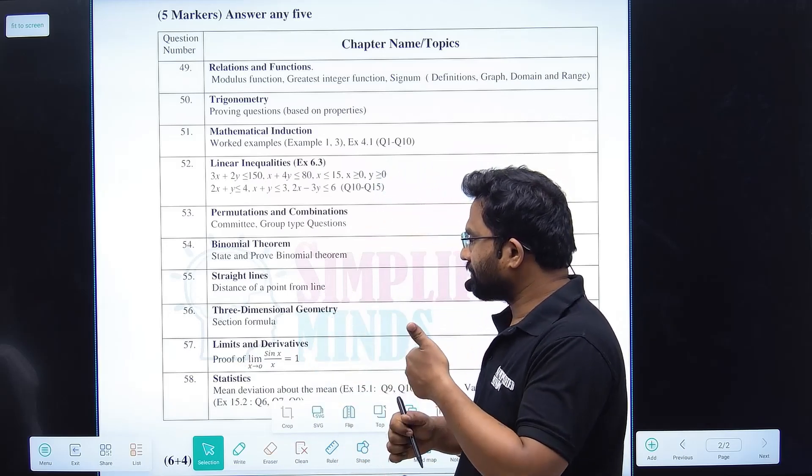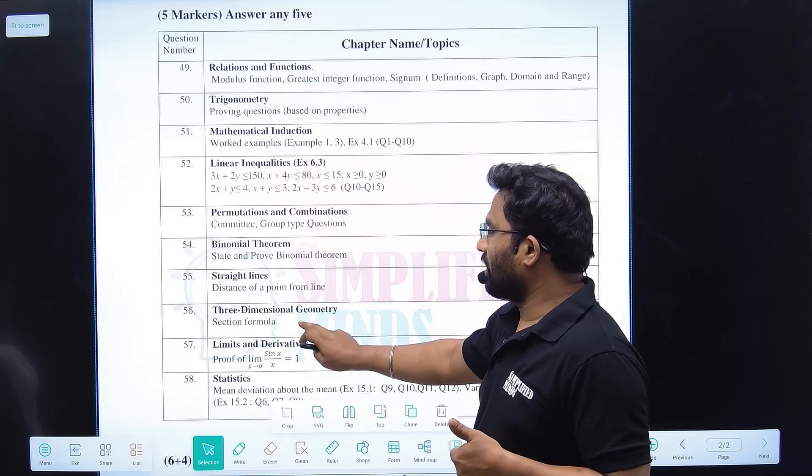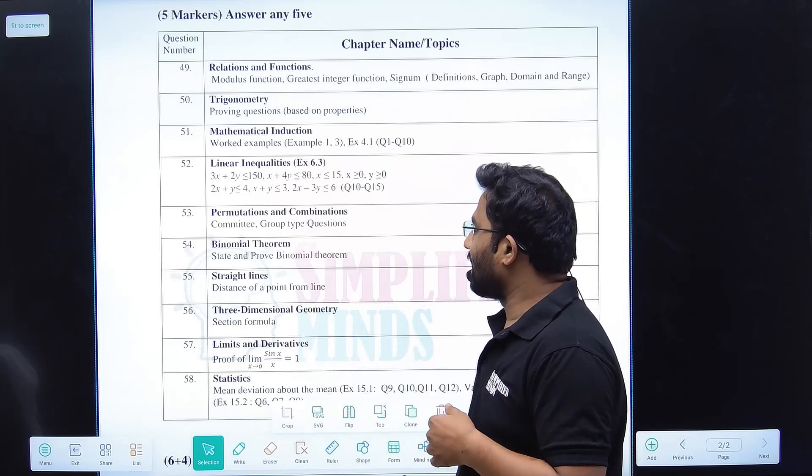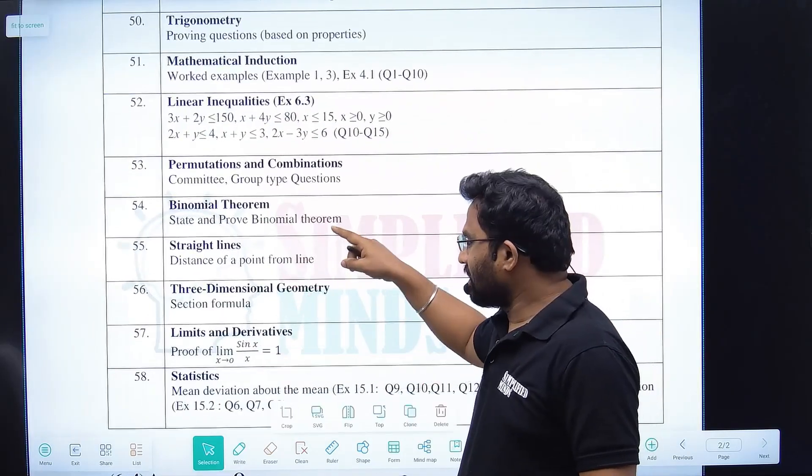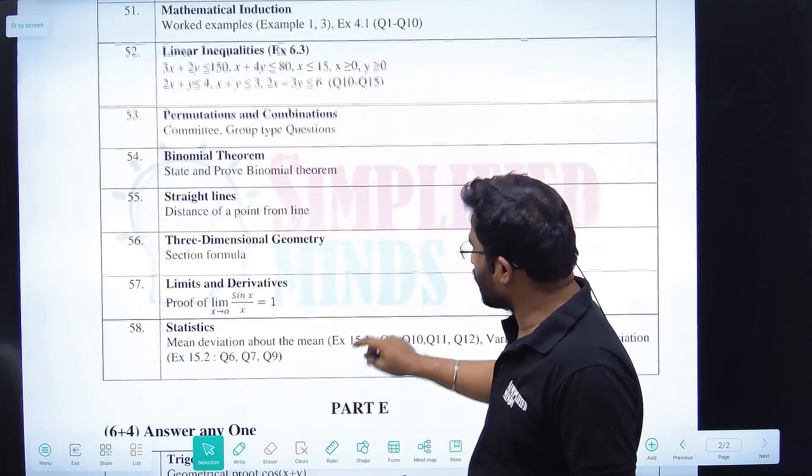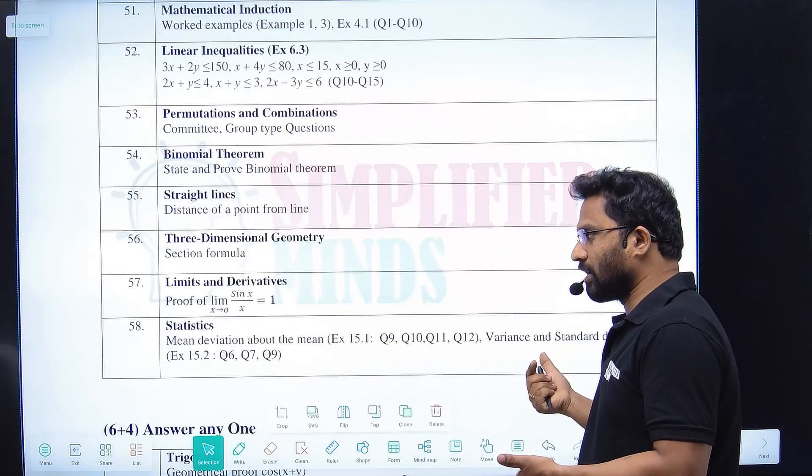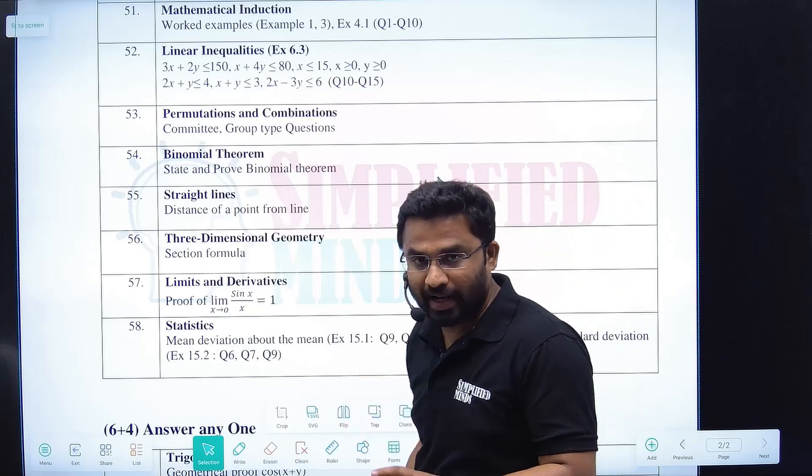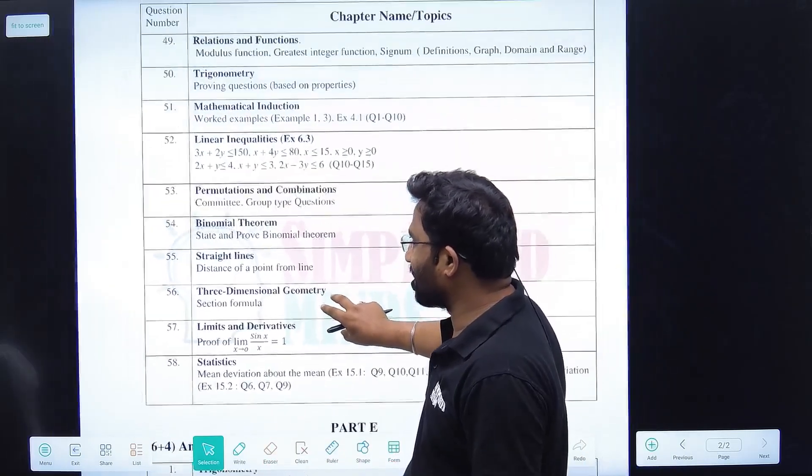Straight lines - distance of a point from a line is a derivation. Section formula in 3D, section formula. Limits and derivatives is one of the most important derivations actually. In statistics I have given the question numbers also, so exactly which exercise, which question numbers to focus on.